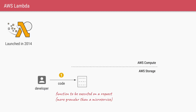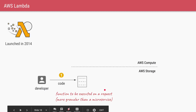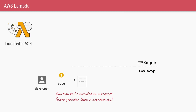As a developer, you write a function to process some request. Think of it as how you would split your monolith into microservices — similarly, you split your microservices further into multiple functions. Let's say you've written one such function and you're deploying it to AWS using the AWS console, where you just upload your function code.